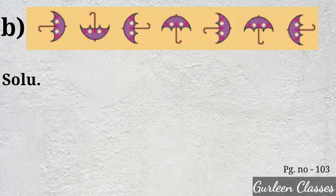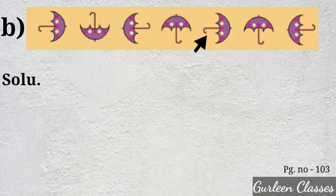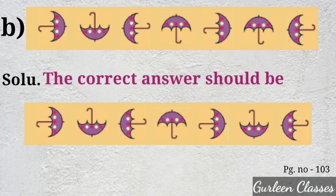Part B. Here pictures of umbrellas are drawn. The pattern is left, top, right, down, left. Then it should be top. But here it is down. So the correct answer should be top.